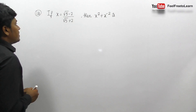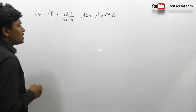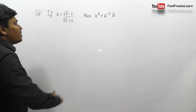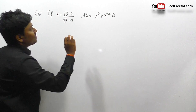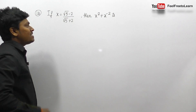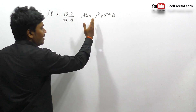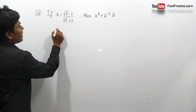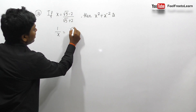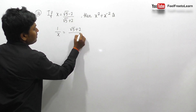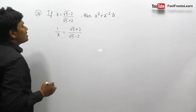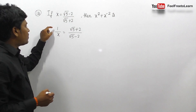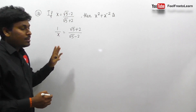Question number 14: if x = (√5-2)/(√5+2), then find x² + x⁻². By using this x value, our target is to find x² + x⁻². If you're confident, you can directly substitute. Otherwise, let me find 1/x: the reciprocal gives 1/x = (√5+2)/(√5-2).